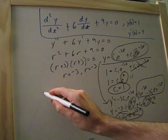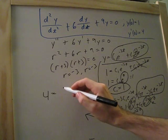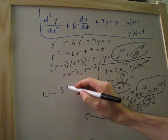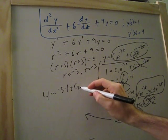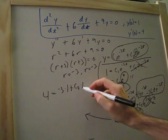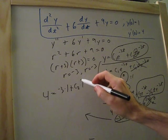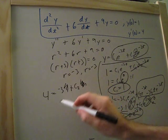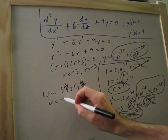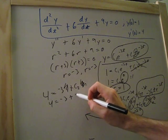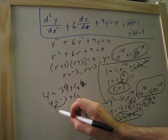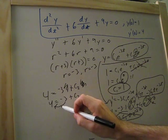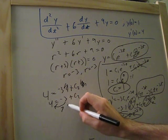We'll bring this over here. 4 is equal to negative 3 times 1 plus c2 times 1. So let's get rid of this. Let's get rid of that. So 4 is equal to negative 3 plus c2. We'll bring this over here. Just subtract it. Or add it. And that's going to be 7.